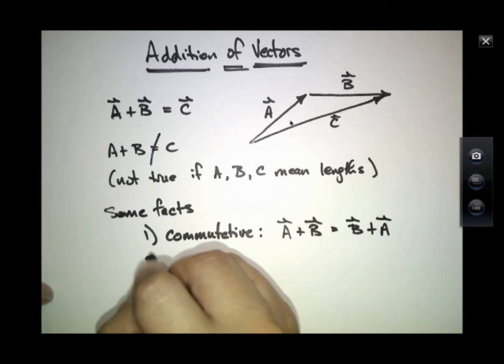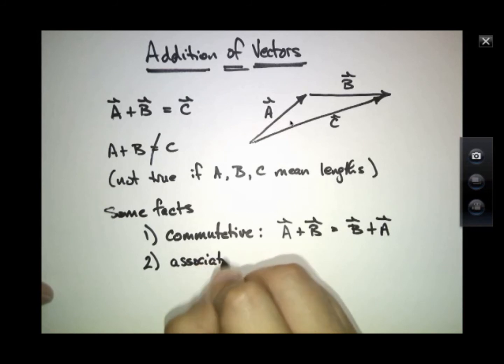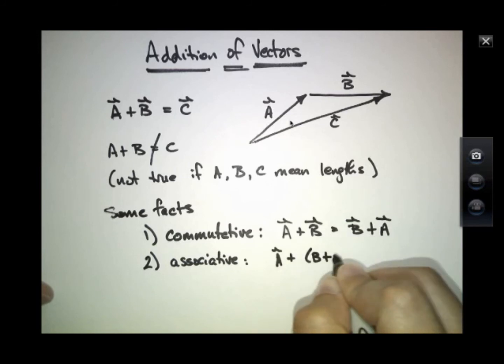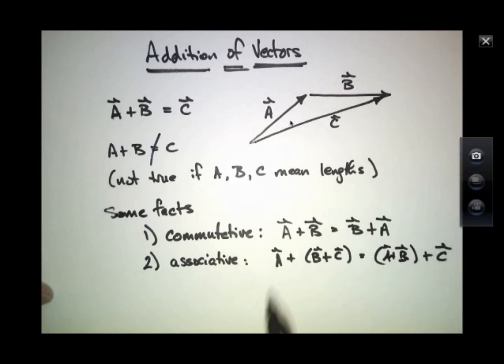And it's associative. A plus the combined sum B plus C is equal to A plus B sum together first plus C. In other words, it doesn't matter what order of operations you do.